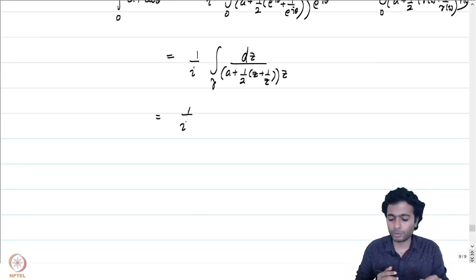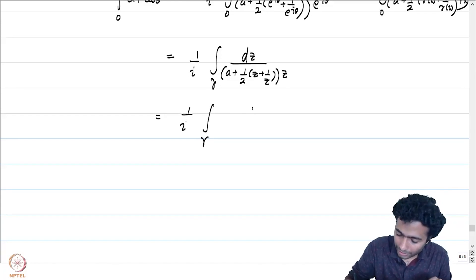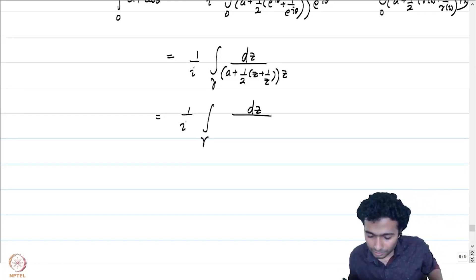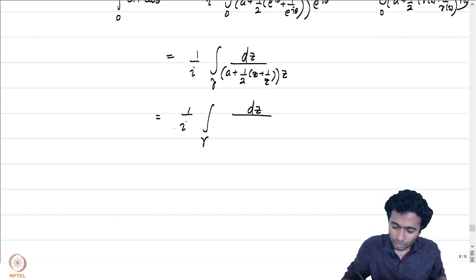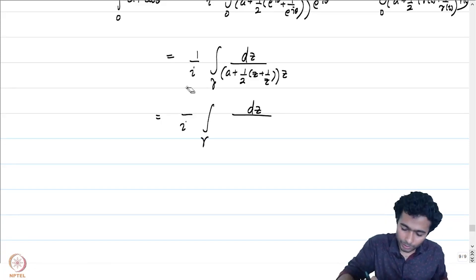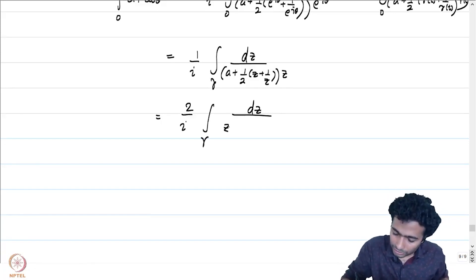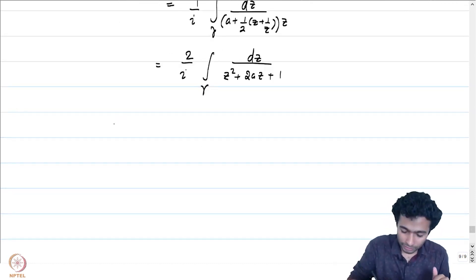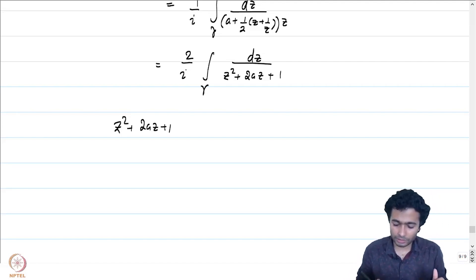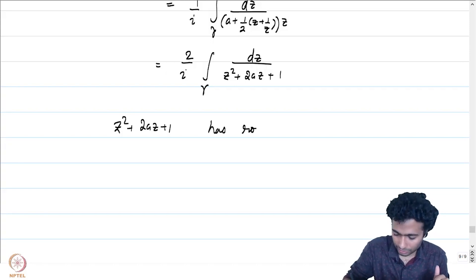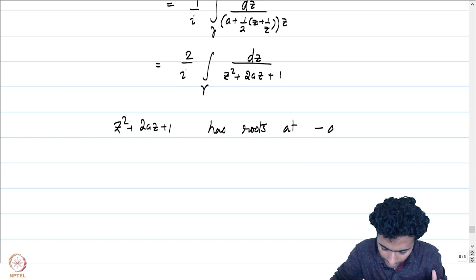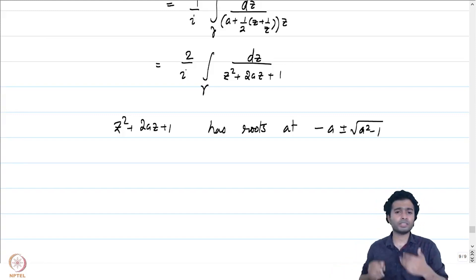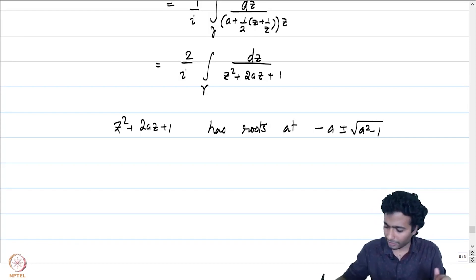Now we have good tools to compute such integrals. Simplifying, we get (2/i) times the integral of dz/(z² + 2az + 1). The denominator z² + 2az + 1 has roots at −a ± √(a²−1). The 2s cancel and these are the roots.